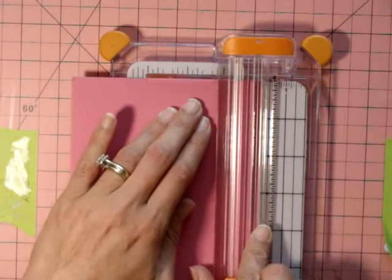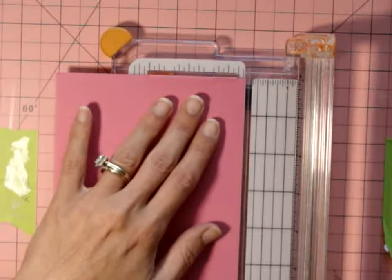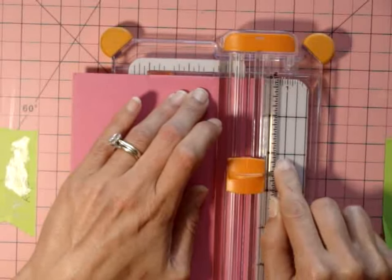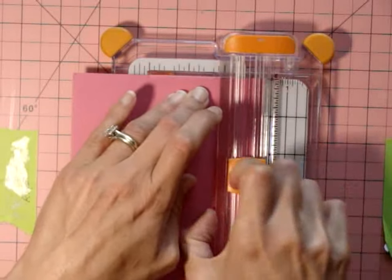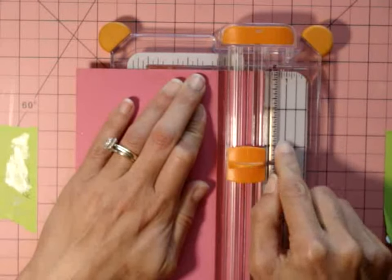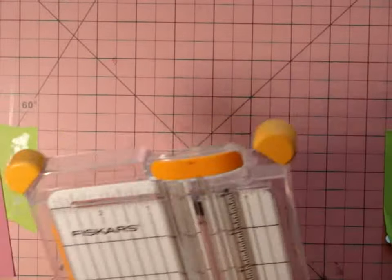To get the little flaps, we're going to cut with our paper trimmer up to the two-inch mark and bring it in about a fourth of an inch. Bring it up to the two-inch mark. Same on the other side: bring it in a fourth of an inch and up to the two-inch mark. Then we're just going to snip off the extra paper.